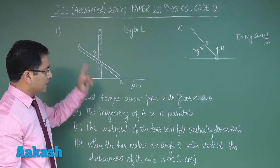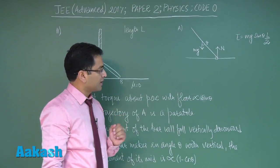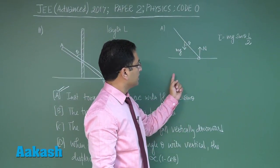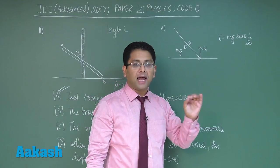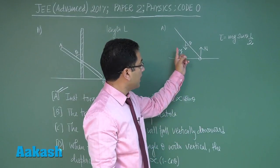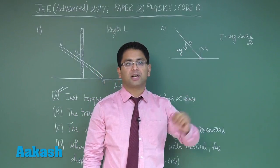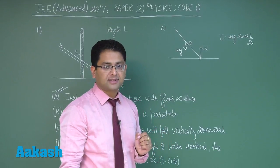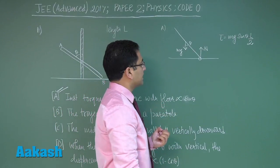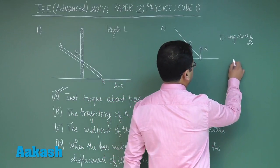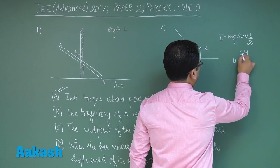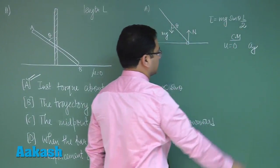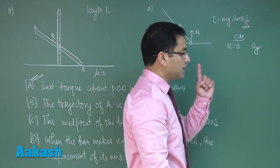Option B says the trajectory of point A is a parabola. To evaluate this, we note the total forces acting on the rod. There are no horizontal forces, and the initial speed of the center of mass is zero. Since the force is purely along the y-direction, the center of mass will have acceleration only along the y-direction.